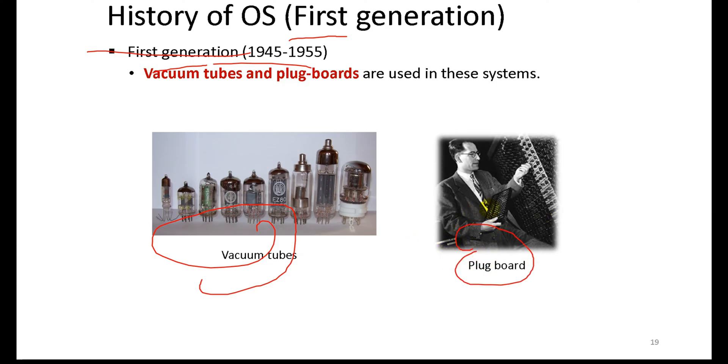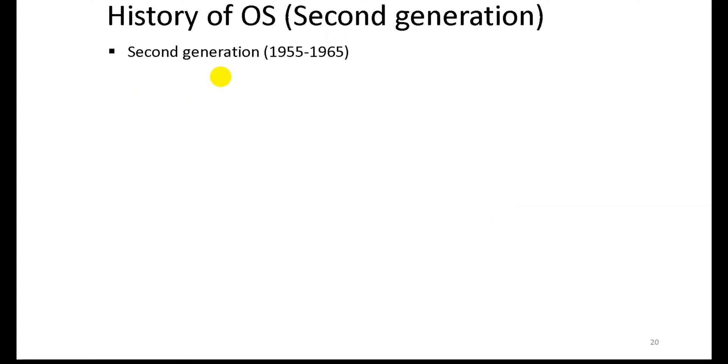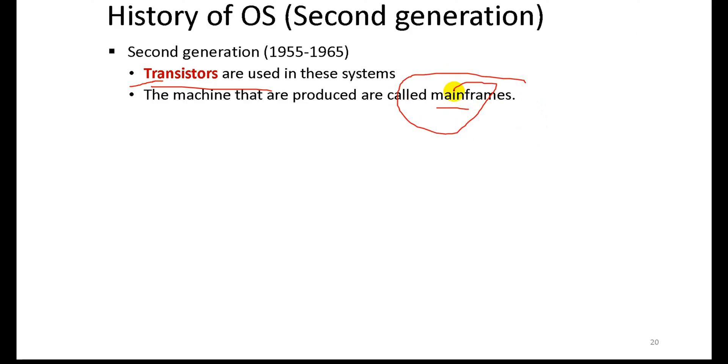In the second generation, the vacuum tubes and plug boards were replaced by transistors. The machines that were produced are called mainframes. Batch systems were used for processing.